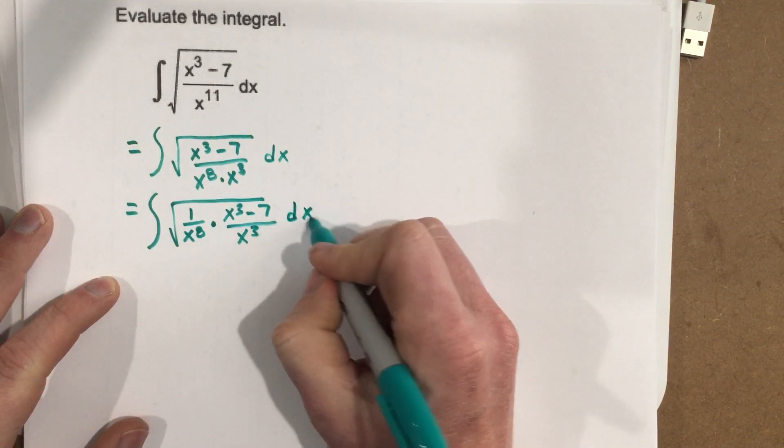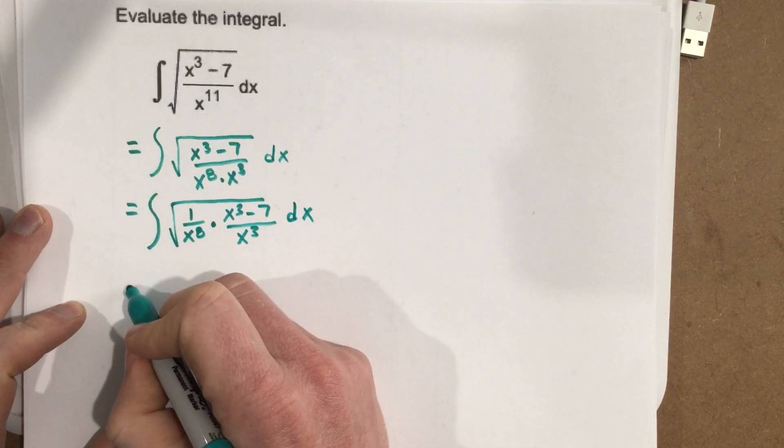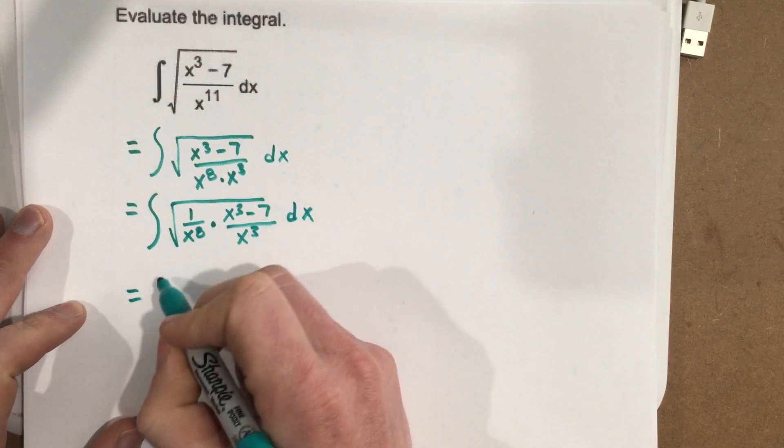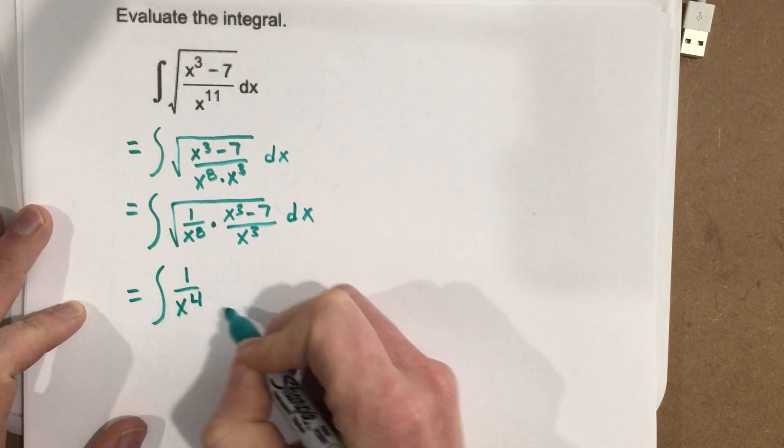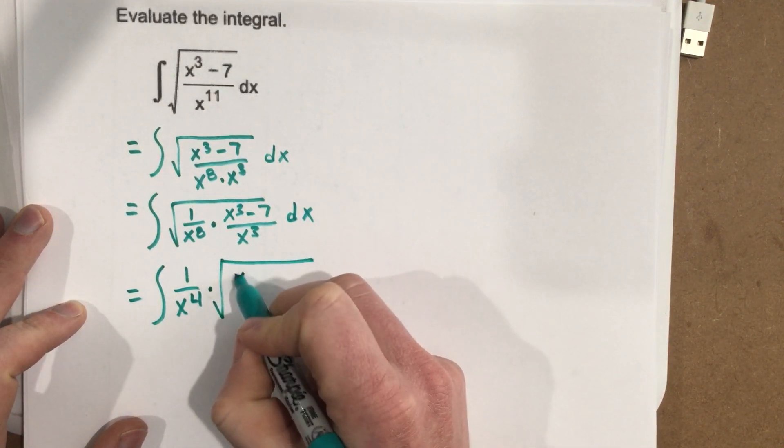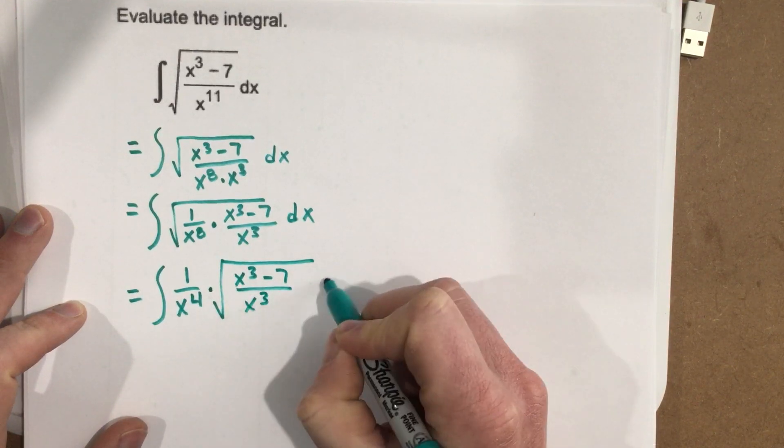Which I can evaluate this radical here. I know that that is actually equal to, so the root of 1 over x to the eighth, is actually just 1 over x to the fourth times root x cubed minus 7 over x cubed dx.